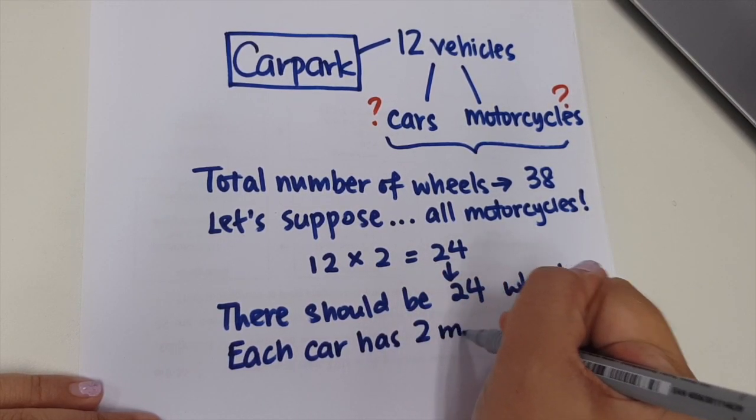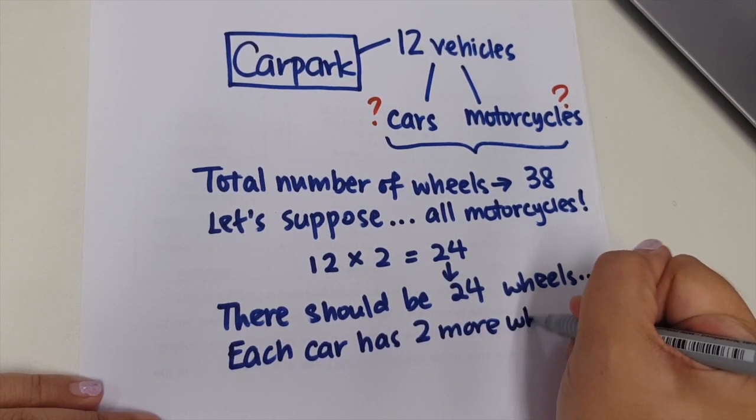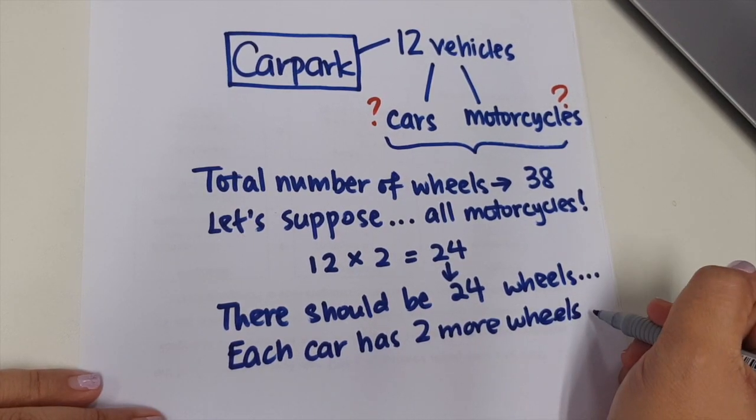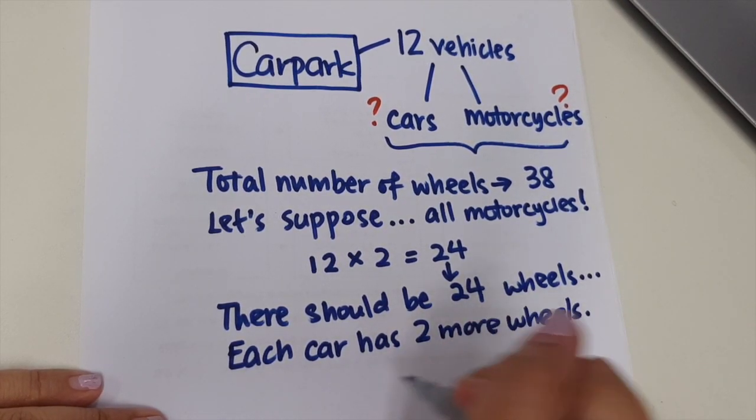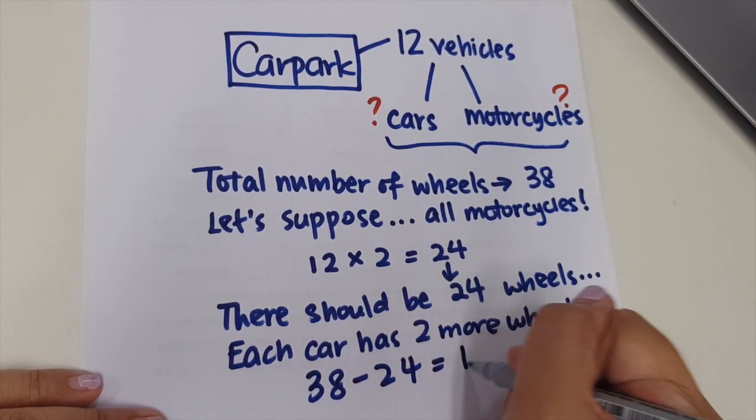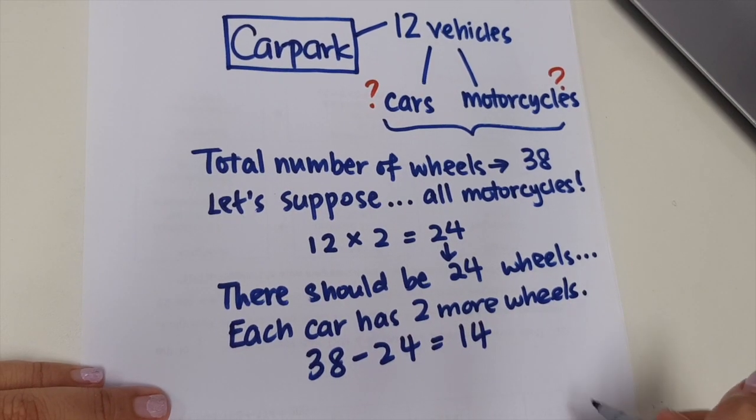Well, each car has two more wheels than motorcycles. So whatever numbers that we have here is for a vehicle with two wheels. However, we have two more wheels for cars. So let's first find the difference.